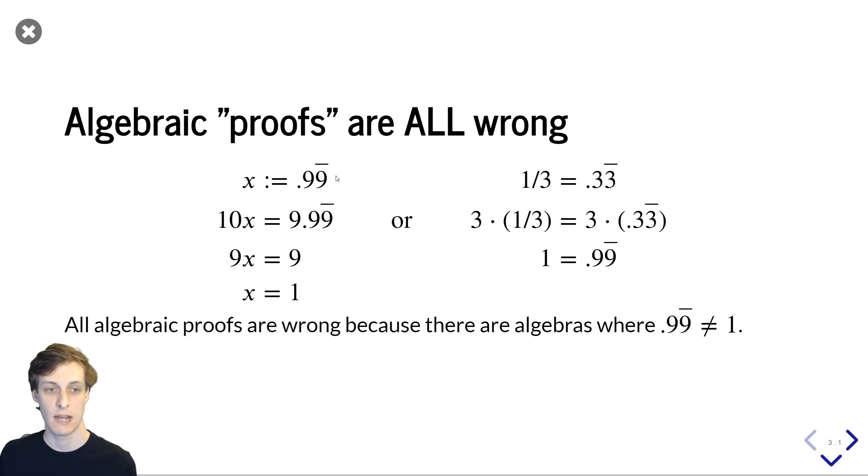I start with x being 0.99 repeating, then I multiply by 10, I subtract x, and then I solve for x equals 1. Seems valid, right? We all know a third is 0.33 repeating, multiply by 3, and then we get 1 is 0.99 repeating, right?